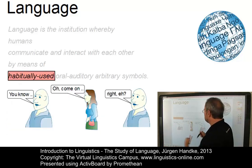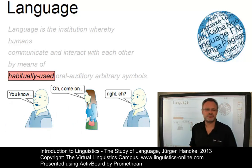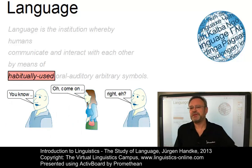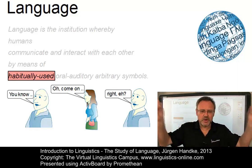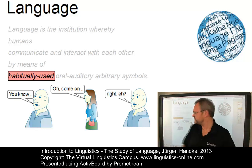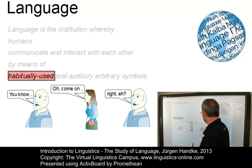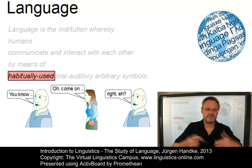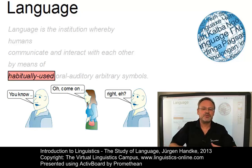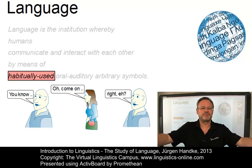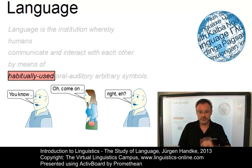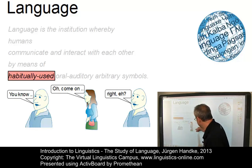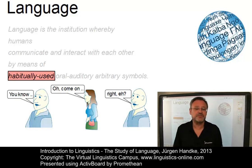Keyword number three: language is habitually used. People use language every day, usually with little cognitive effort. Words and phrases like 'you know,' 'oh,' 'come on' usually flow out of the mouth in a subconscious, almost automatic way. You don't normally think about these phrases before uttering them — probably not.